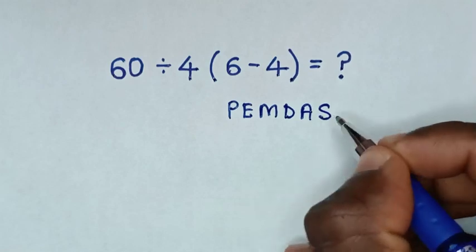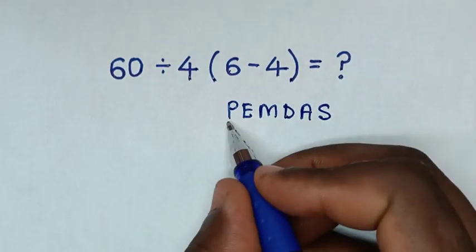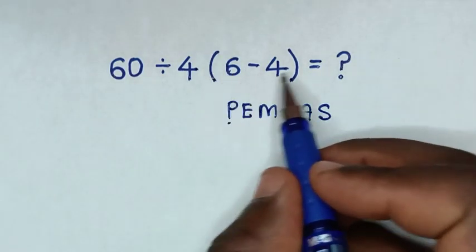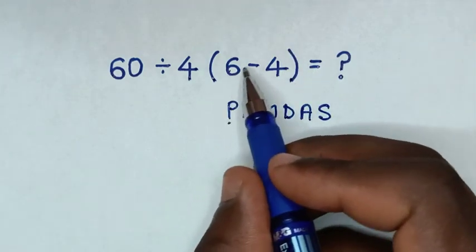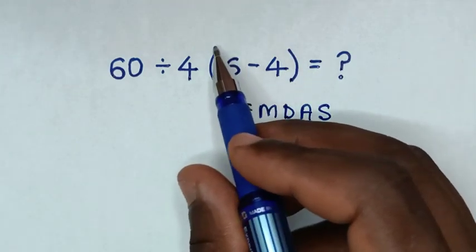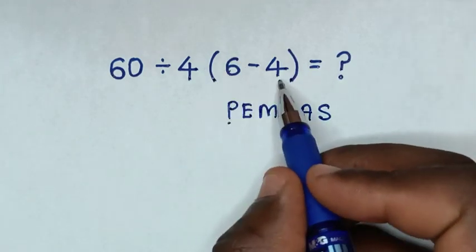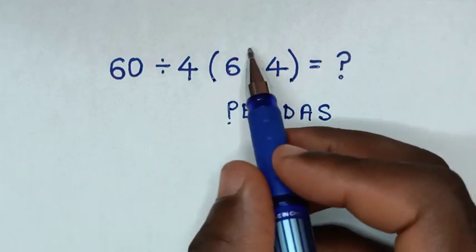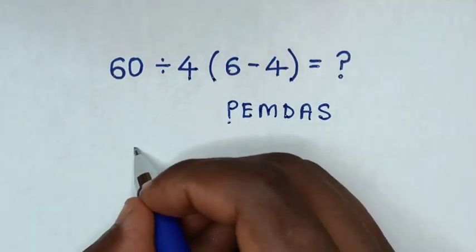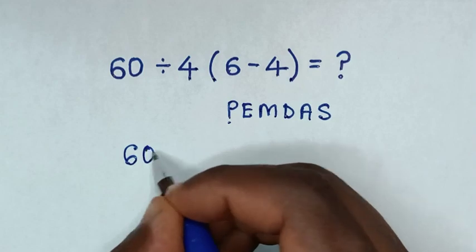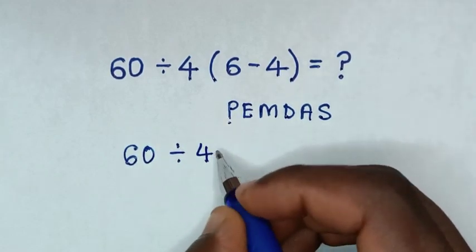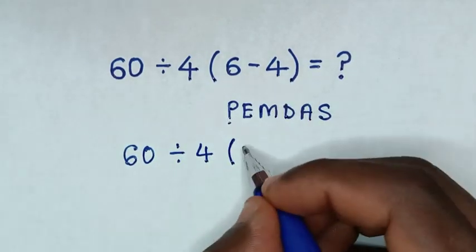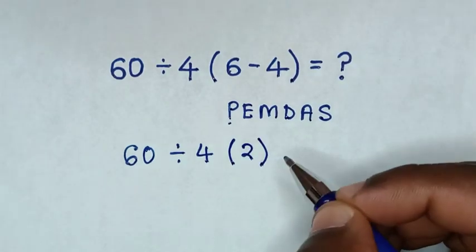PEMDAS rule: P is parenthesis, and here we have parenthesis. The operation inside this parenthesis is 6 minus 4, which is 2. So we start to deal with this first. It will be 60 divided by 4, then parenthesis 2 parenthesis.